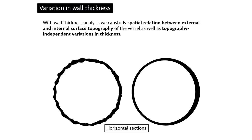Analysis of variation in wall thickness can give additional information which cannot be extracted from a single surface. With wall thickness analysis we can in fact study the spatial relation between external and internal surface topography of the vessel, as well as topography-independent variations in thickness. Local variation is closely related to the surface morphology and topography. Surface shapes and features are manifested by variability in the wall thickness, and consequently the study of local thickness variability is the topographical analysis based on its wide-dimensional representations.